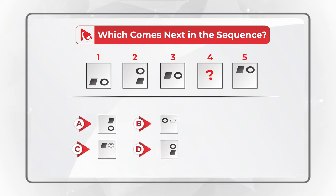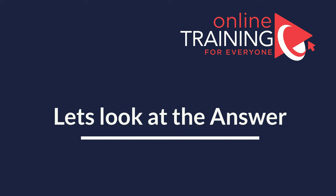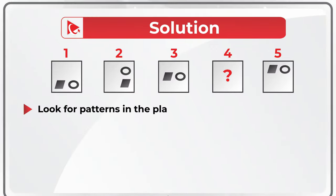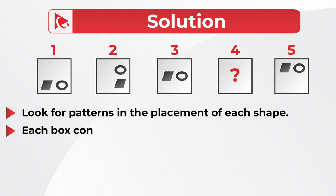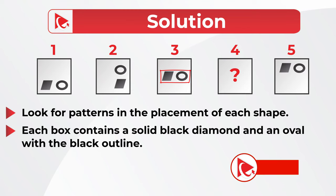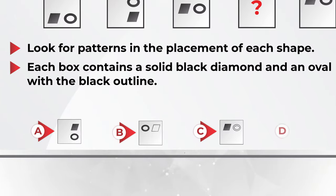Give yourself a little bit of time and look closely to see if you can get to the correct answer. My advice as usual: always look for patterns. In this case, the pattern is the location of the smaller shapes inside the square. You might have noticed that the smaller shapes inside the squares are always a diamond filled with black and an oval with a black outline. This pattern is persistent for shapes 1, 2, 3, and 5.